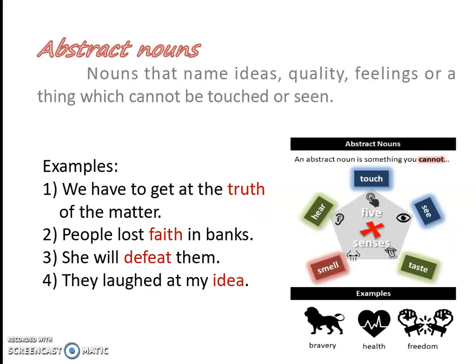Next, we are going to see about abstract nouns. There are some things which we cannot see, cannot feel, or cannot touch — those things are called abstract nouns. The nouns that name ideas, quality, or feelings are things which cannot be touched or seen. Examples: bravery, health, freedom. Here are some examples: 'We have to get at the truth of the matter.' 'The people lost faith in the banks.' 'She will defeat them.' 'They laugh at my idea.' Here, truth, faith, defeat, and idea are all abstract nouns.